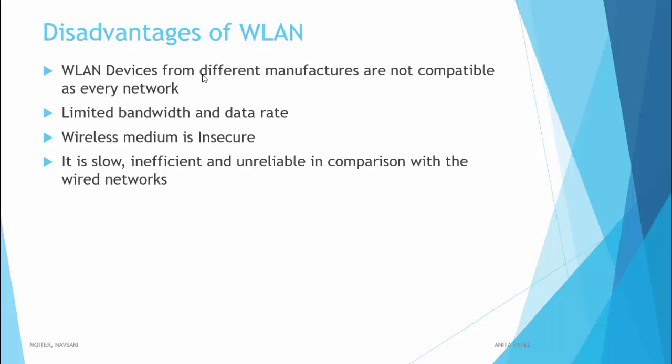The wireless medium is insecure, leading to jamming and unsafe attacks. There can be interference in the wireless link because of traffic, errors, and range, making data transmitted unreliable. It is slow, inefficient, and unreliable in comparison with the wired network.